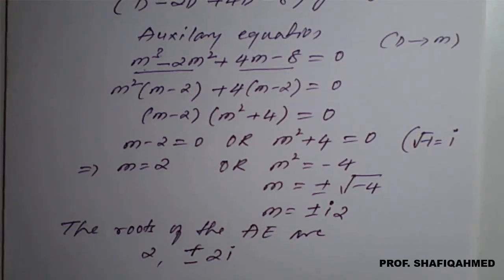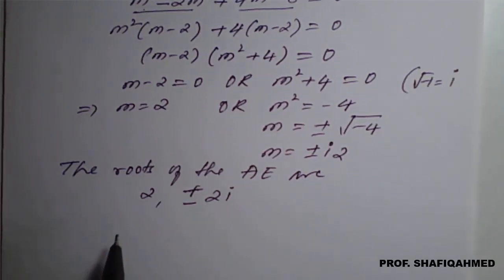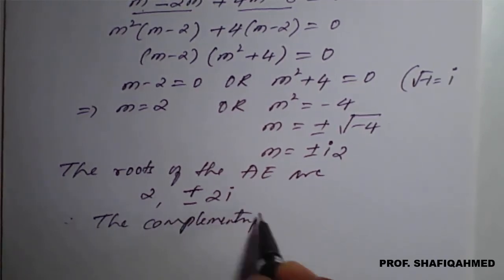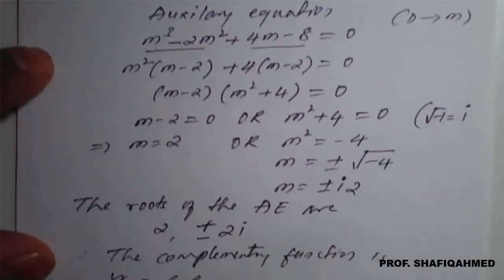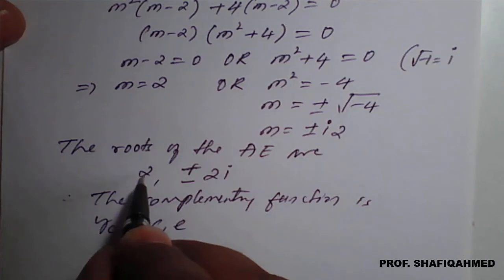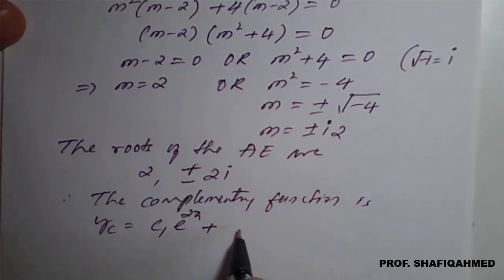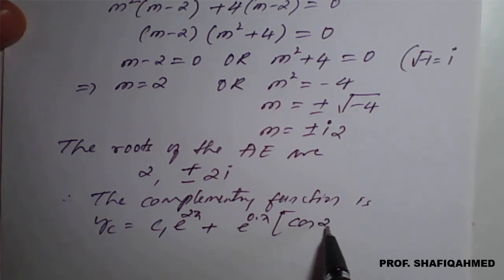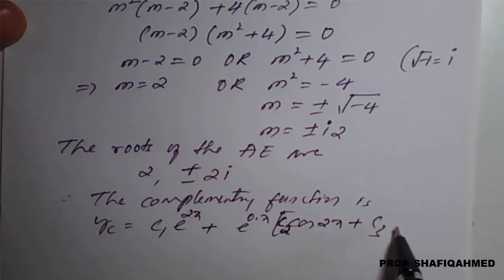For the complementary function: the real root m = 2 gives c₁e^(2x). The complex roots ±2i have real part 0 and imaginary part 2, so they contribute e^(0·x)[c₂cos(2x) + c₃sin(2x)], which simplifies to c₂cos(2x) + c₃sin(2x).